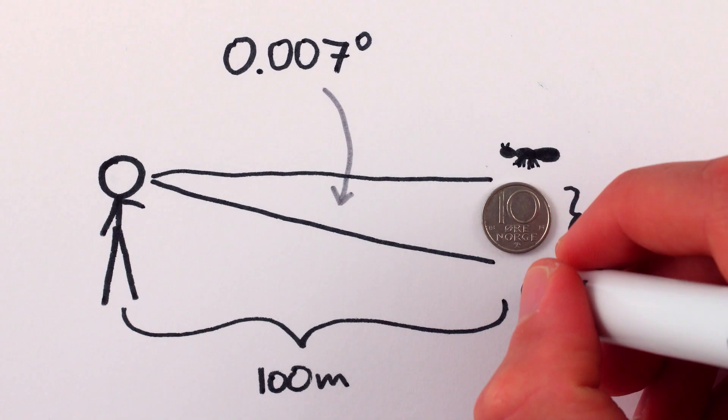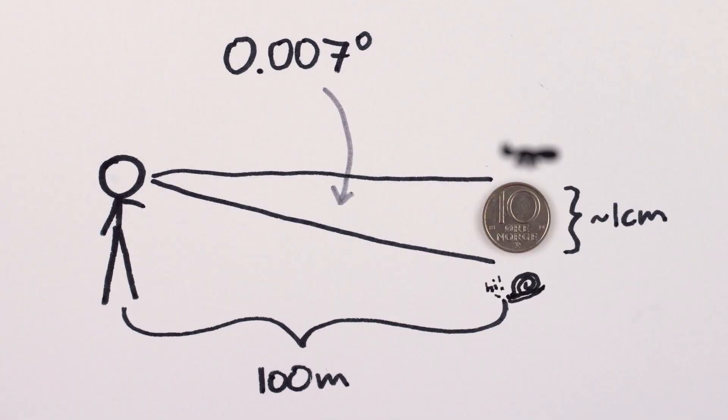Another way of putting this is that everything a hundred meters away and smaller than one centimeter gets blurred so it appears to be about a centimeter in size, no matter how small it really is. Subtle details, smaller than one centimeter, blur away.